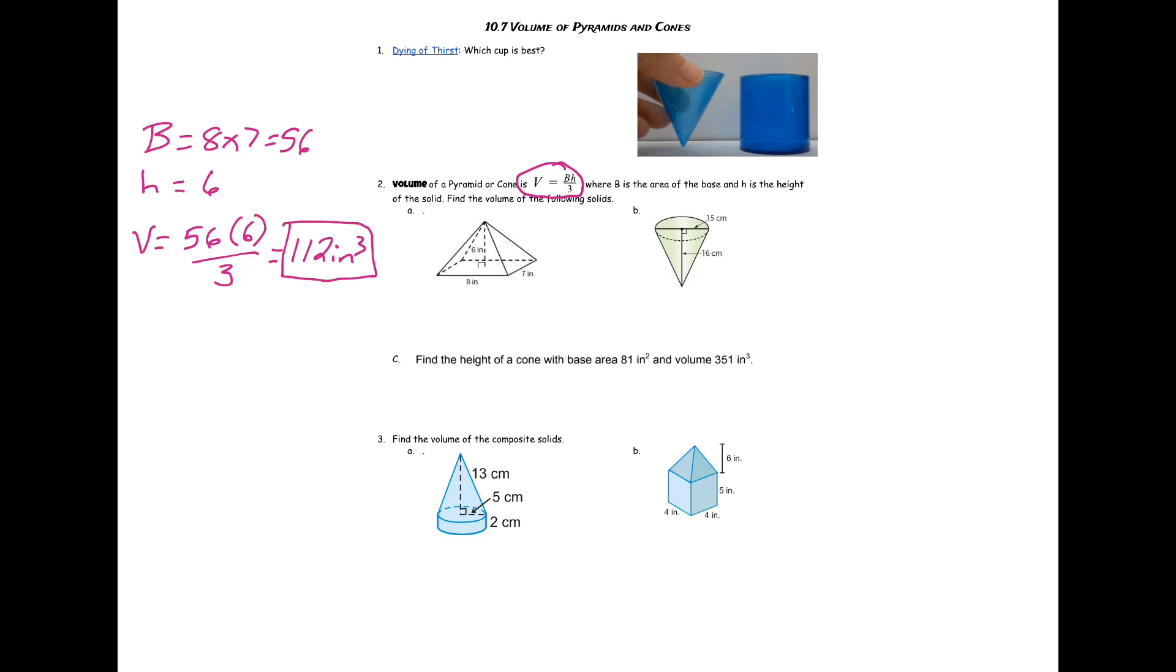All right, part b: go ahead and see if you can find the volume of that cone. The base of a circle is pi r squared. Notice that the radius is 7.5 here; 15 is the diameter so you want to cut that in half. Then you would take 176.63, which is our area of the base, times the 16 which is our height, divide by 3, and get 942.03 centimeters cubed.